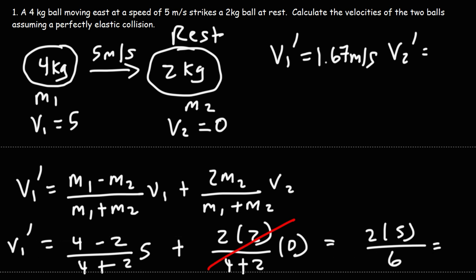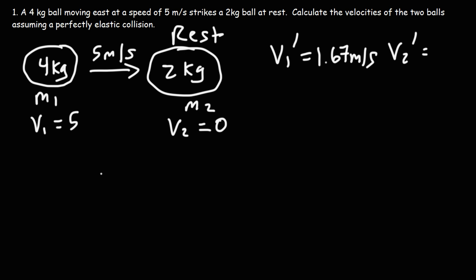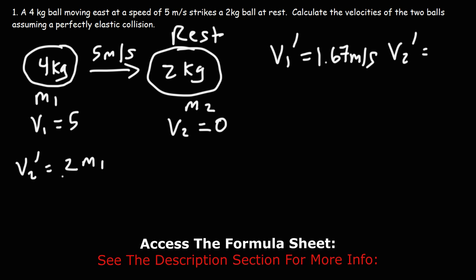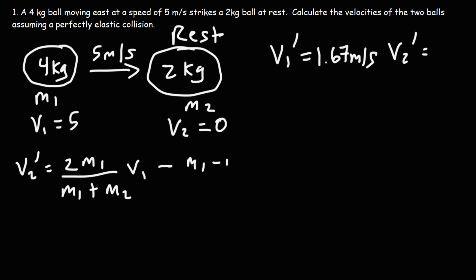So now let's calculate the second velocity. Here's the formula. V2 prime is going to be 2 times M1 over M1 plus M2 times V1 minus M1 minus M2 over the sum of the two masses. And then all of that is going to be times V2.